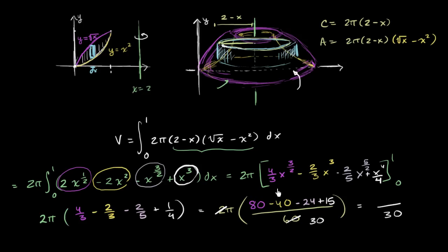And up here, 80 minus 40 is 40. 40 minus 24 gets us to 16. 16 plus 15 is 31. So we get 31π/30 for the volume of the figure right over there.